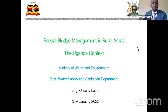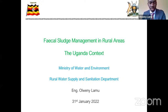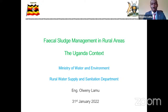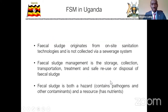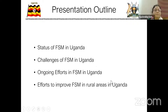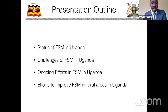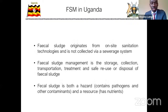Hello, good afternoon. Thank you. I have a five to eight minute presentation on aspects of fecal sludge management in rural areas in Uganda. Looking at the status of fecal sludge in Uganda, the challenges, and efforts to improve fecal sludge management in rural areas: there are approximately 8.7 million people in Uganda with no access to sanitation. As of 2020, only 18% of people in rural areas and 45% of those in urban areas have access to basic sanitation. Poor sanitation costs Uganda about 177 million US dollars annually.